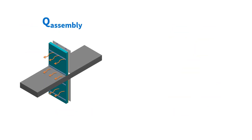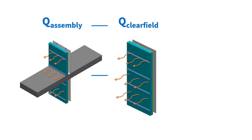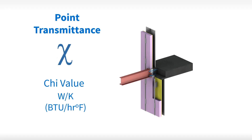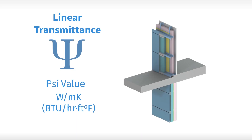Performance of a transition detail is determined by taking the full heat flow through an assembly with the detail present, and subtracting out the heat loss through the assembly if there were no detail. This leaves just the heat flow caused by the transition detail. For point details, that heat flow is left as is and called a chi value. For linear details, we turn it into a heat flow per length, called a psi value. By separating out the performance of these details from the clear wall, we can simplify our calculations greatly.